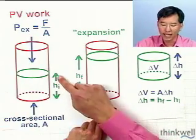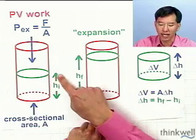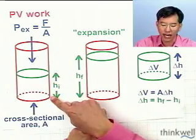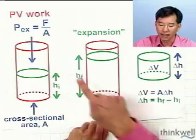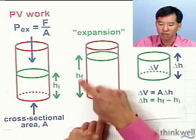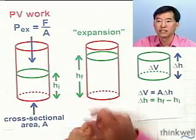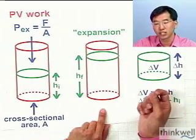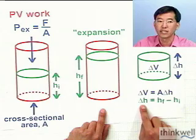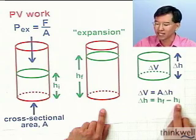We can quantify the expansion by noting that we can measure the height from the bottom of the cylinder up to the bottom of the piston. And then after the expansion, we can measure the new height. And just as we defined a change in energy to be the final energy minus the initial energy, we're going to define the change in height to be the final height minus the initial height.